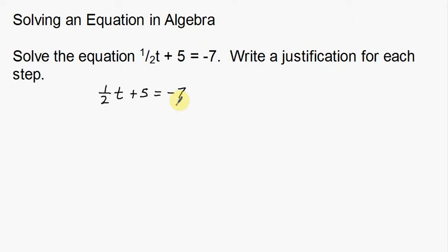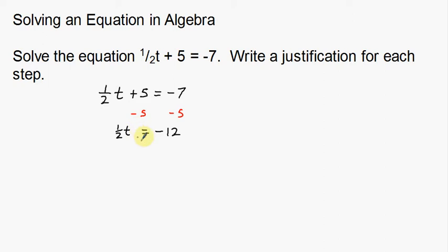The first thing I'm going to do is subtract 5 from both sides. That gives me one half t is equal to negative 12, since the plus 5 and negative 5 cancel to zero, and negative 7 and negative 5 make negative 12. So there's my first step.